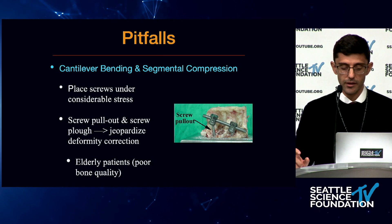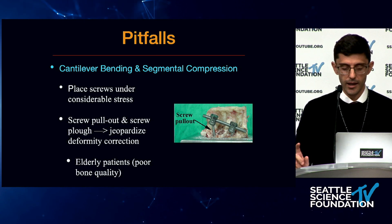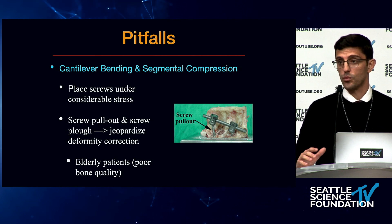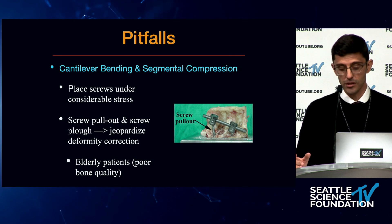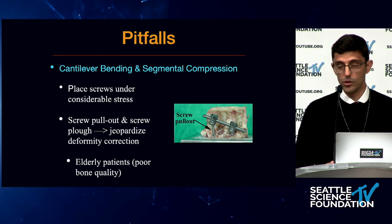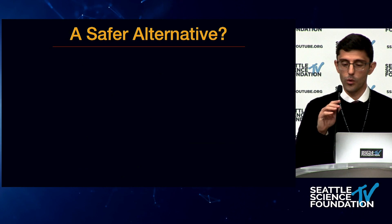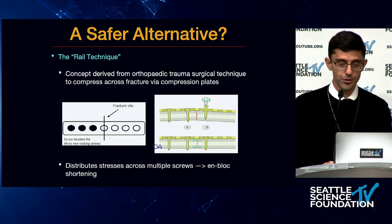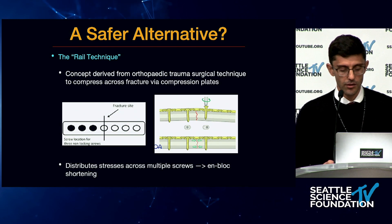Screw pull-out is a considerable concern, especially with cantilever bending. Segmental compression can result in screw plow, and this will jeopardize your deformity correction. If you don't have good fixation, you will not be able to achieve the correction you're looking for. This brings us to the question: is there a safer alternative? And the answer is yes.